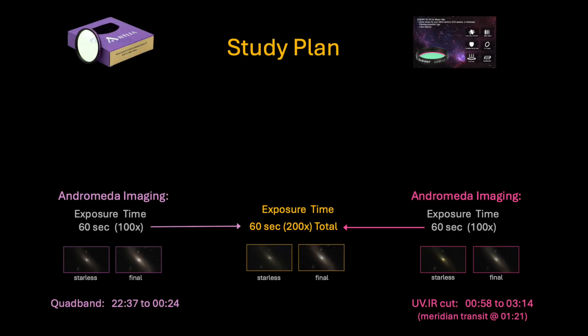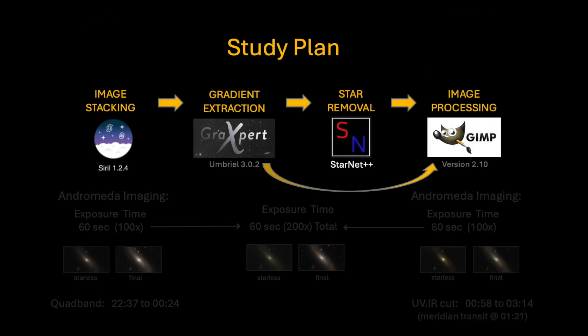For the second part of this filter comparative study, I selected 60 seconds as the exposure time to use. I collected and chose 100 good subframes from each imaging run performed with each filter and use them for stacking and developing the galaxy image. The process I used is as follows. Image stacking was done in Cyril. Background gradient extraction was done using Graxpert. Star removal was performed with StarNet++. Image development was achieved by using GIMP.